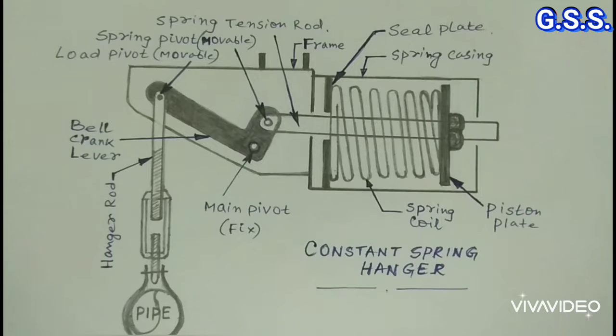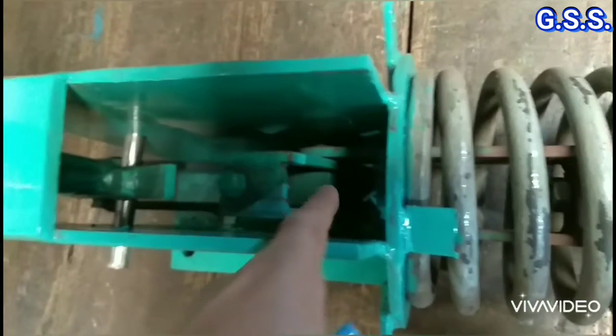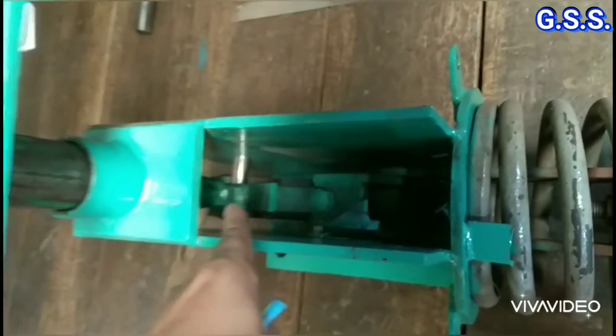Thus, we can get more vertical movement using constant spring support. Now you can see the bell crank lever inside the constant spring support.